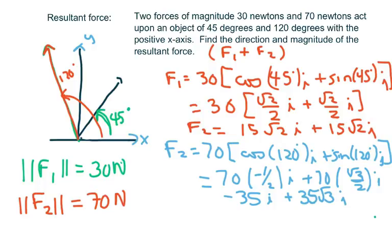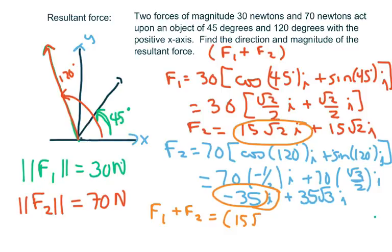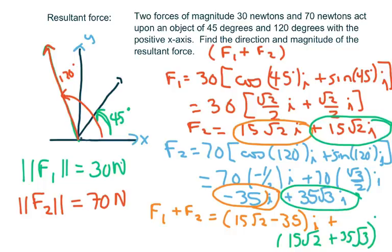Now I'm going to do like I did in the previous video when I add these. I'm going to add force one plus force two. I'm going to add my i's together and then put the i on the outside. So that's going to be 15 root 2 minus 35, put the i. And then plus I'm going to add my j's. This would be your j part here. So we're just adding the j's and the i's.